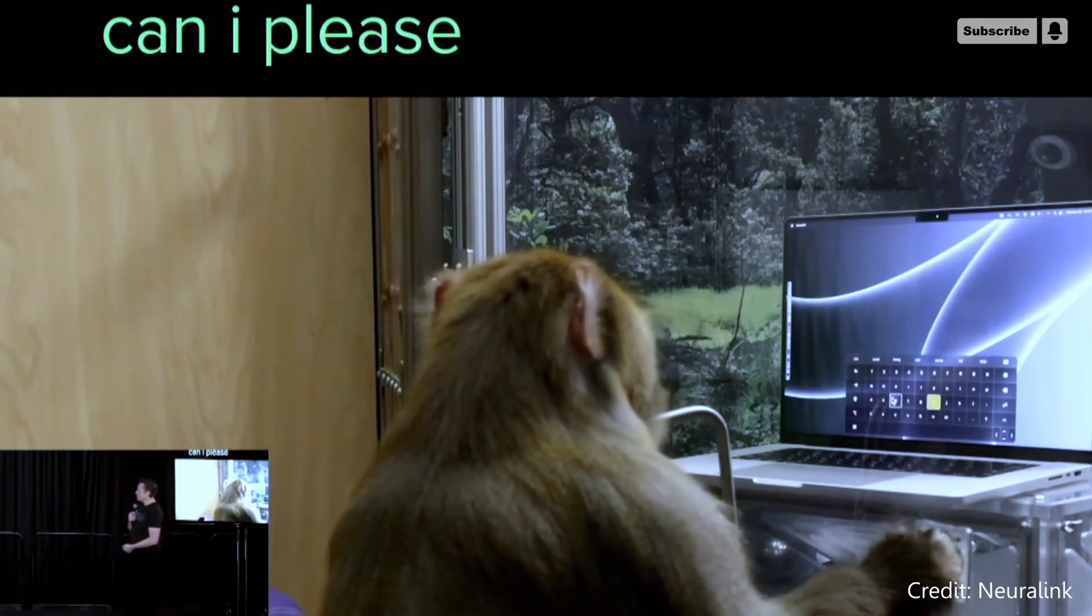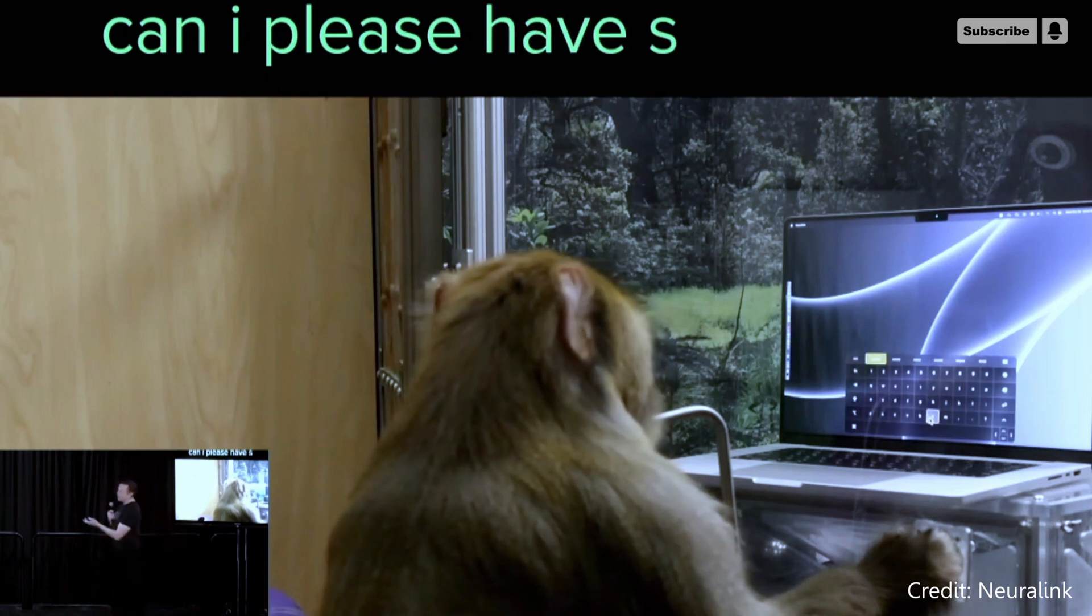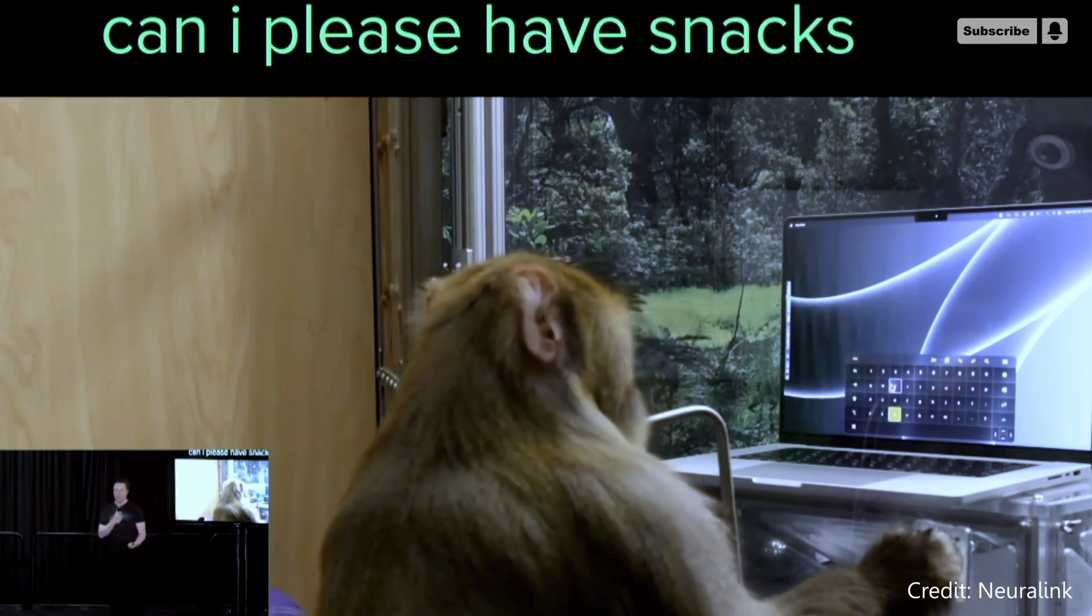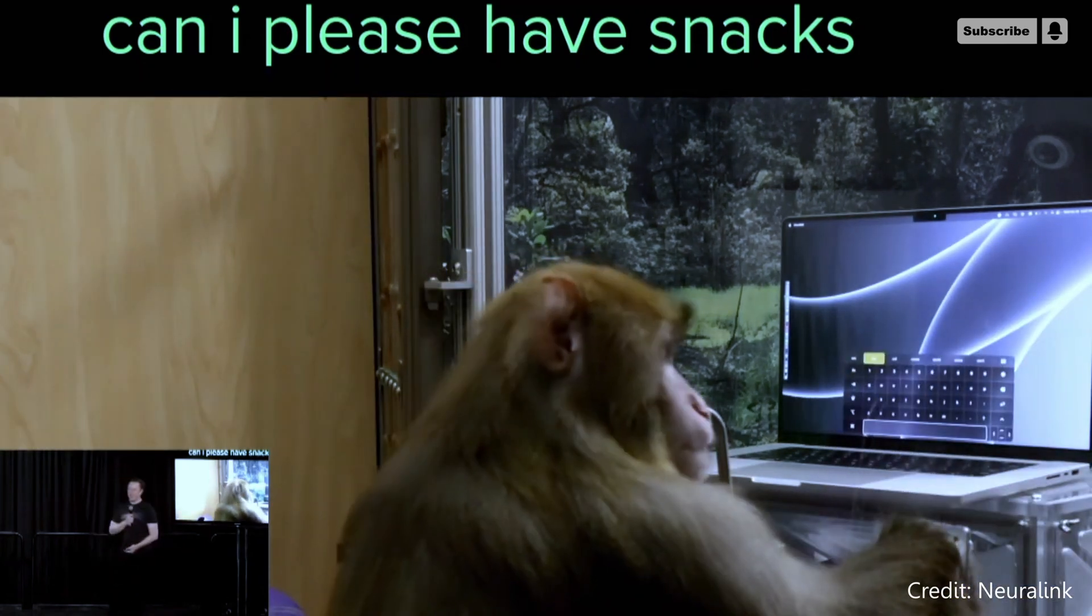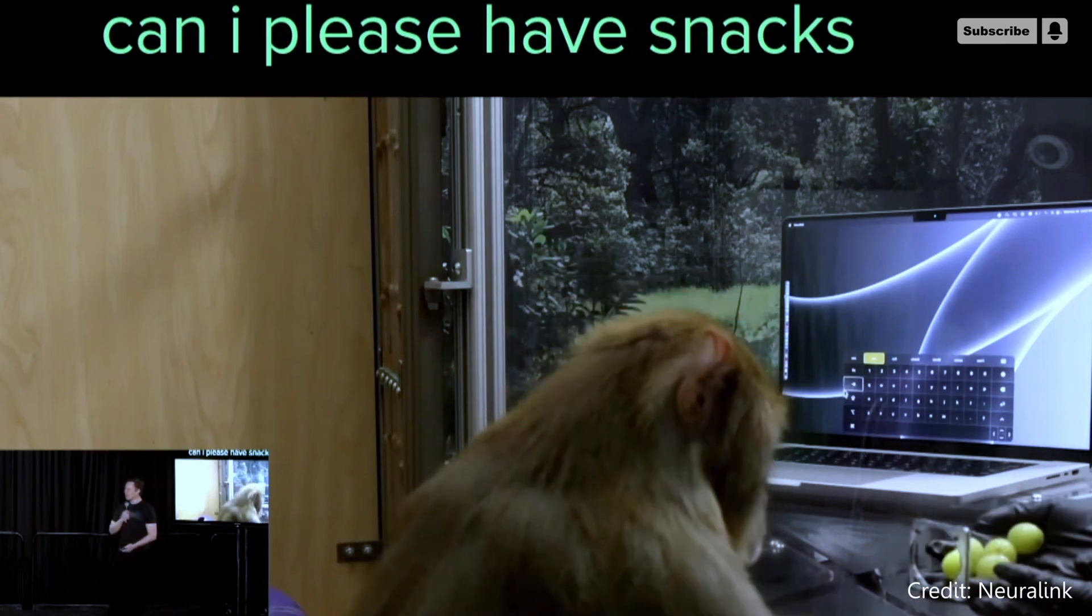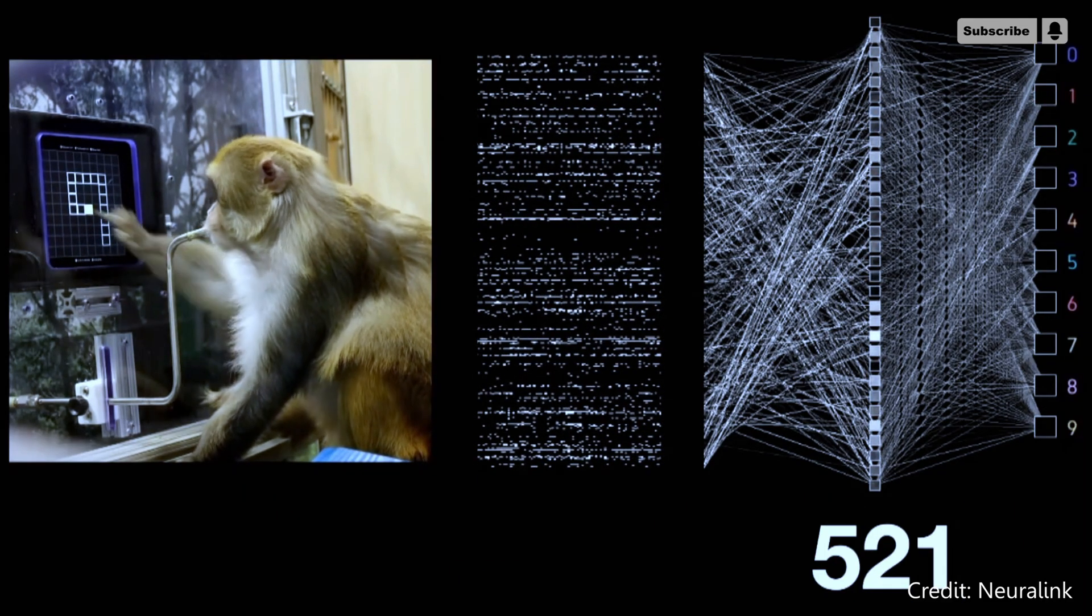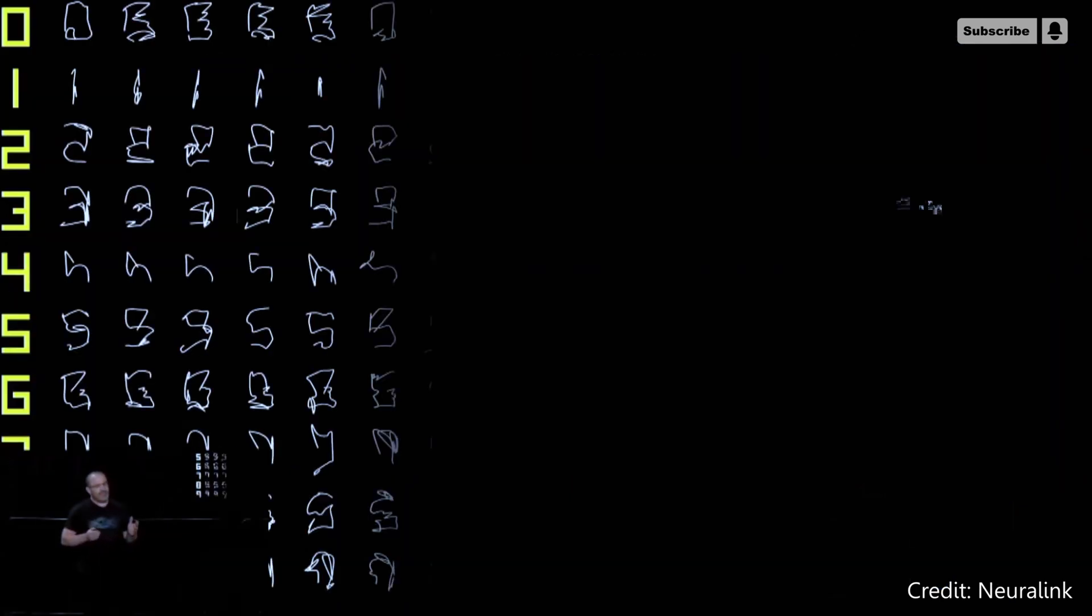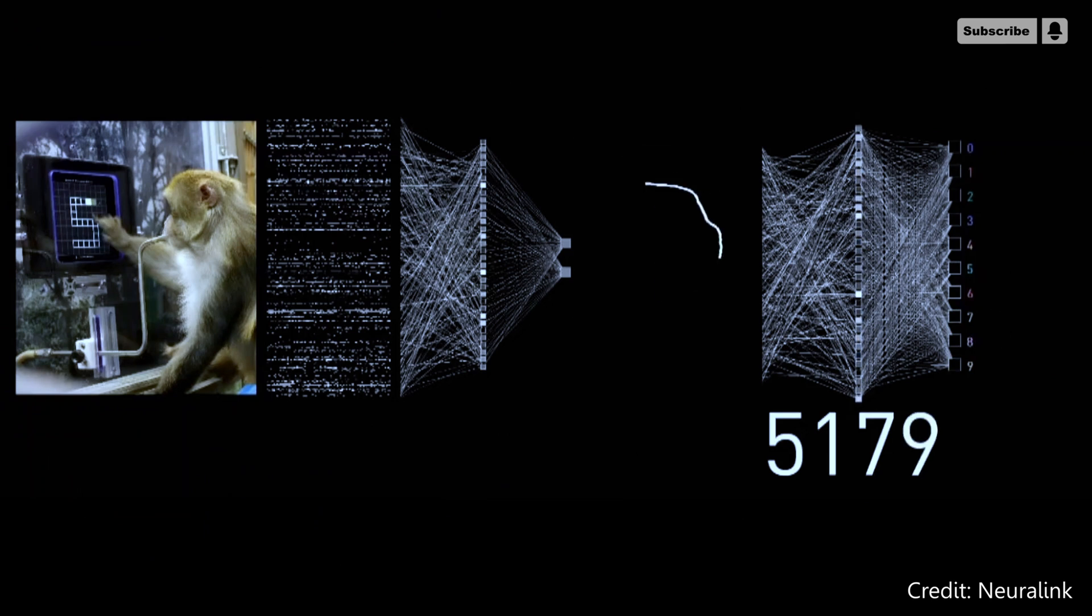Musk emphasized that when implanting one of Neuralink's brain-computer interface devices, the company handles its test animals with the utmost care and conducts rigorous benchmark testing. Musk demonstrated a Neuralink monkey that was spelling out different words with its brain waves. Two monkeys have already been successfully implanted with Neuralink's improved N1 and have used past versions of the brain-computer interface device for two years without experiencing any negative effects.